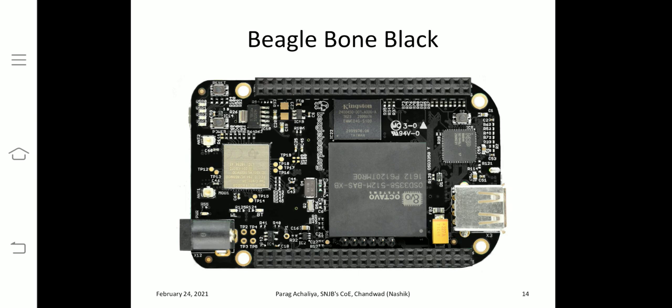BeagleBone Black will have all the types of ports like we already discussed for the Raspberry Pi — graphic port, input/output ports for sensors, power supply, display port, and all types of ports are available on this BeagleBone Black. We are not going to see all those boards in detail because they are just for study purpose; we are not going to use these boards in practicals either.